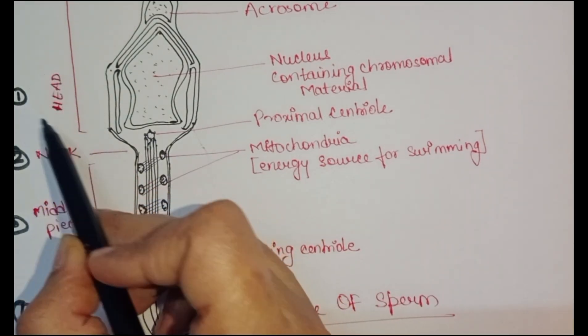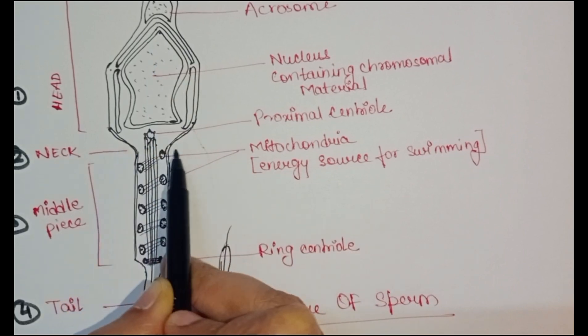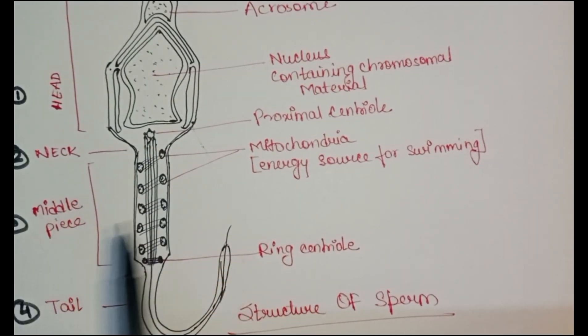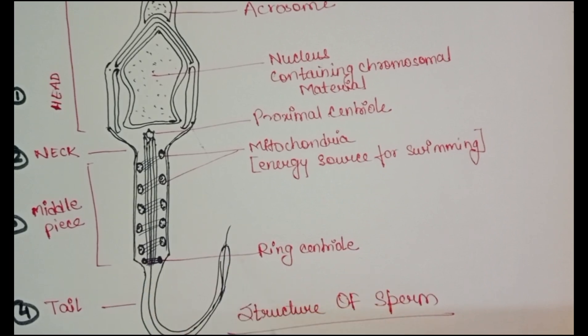It is composed of a head - this is the head portion, neck - this is the neck portion, middle piece - this is the middle piece, and a tail. This structure is the tail.